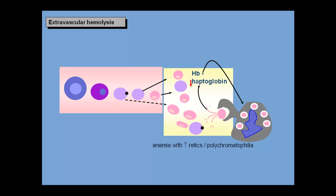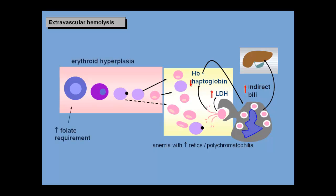In the process, plasma haptoglobin levels fall. Small amounts of red cell LDH also leak out, raising plasma LDH levels. Meanwhile, all the excessive red cell phagocytosis creates a high bilirubin load, increasing the plasma indirect bilirubin. The classic pattern of hemolysis is anemia with increased reticulocytes, elevated LDH and indirect bilirubin, and decreased haptoglobin. If this process goes on for months to years, the marrow develops erythroid hyperplasia and increased folate requirements. Bilirubin gallstones may develop and can cause biliary obstruction, resulting in direct hyperbilirubinemia on top of the indirect hyperbilirubinemia.